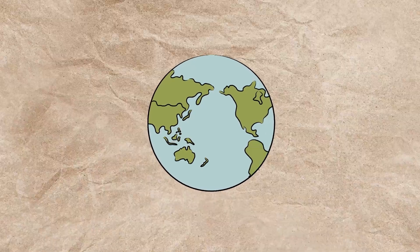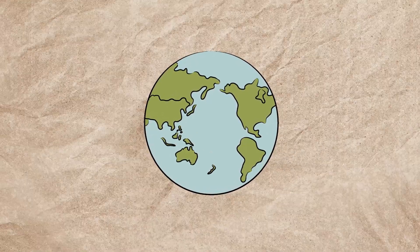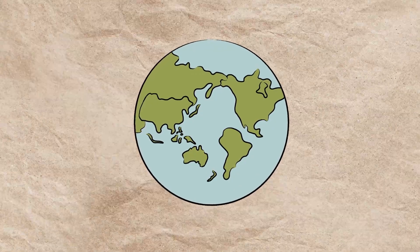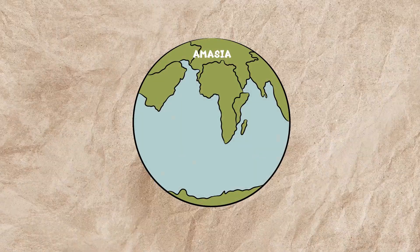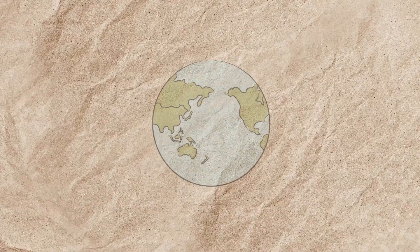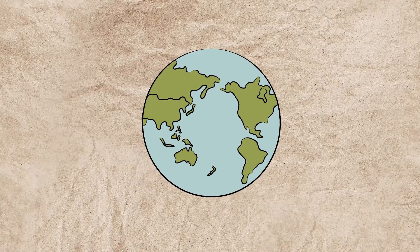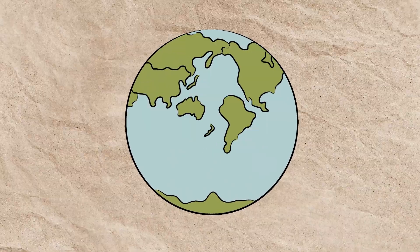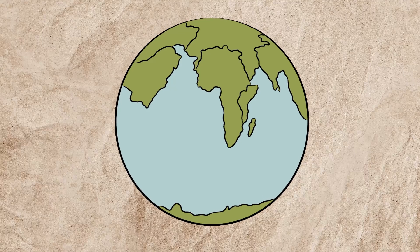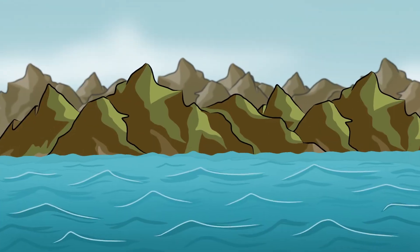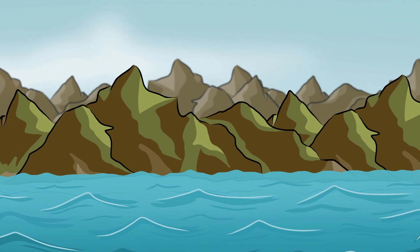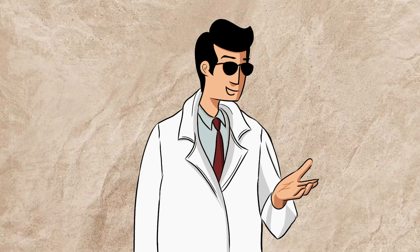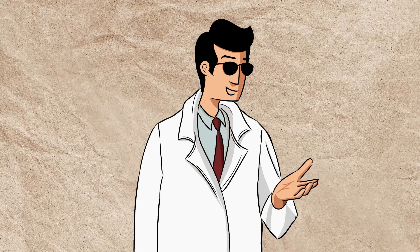Looking ahead, scientists predict that the continents will keep drifting, and over time, new supercontinents could form. One possibility is the creation of a supercontinent called Amasia, a merging of America and Asia. In this scenario, the Pacific Ocean would close as the Americas, currently separated from Asia, would eventually collide with the Asian continent. This would result in the formation of a giant landmass, with enormous mountain ranges rising where the two continents meet. This collision would drastically alter the Earth's landscape, reshaping coastlines, climates, and ecosystems in ways we can hardly imagine.